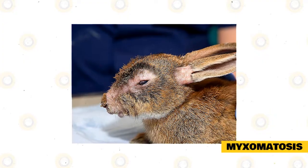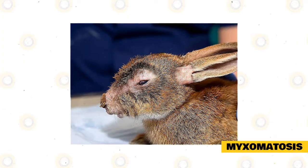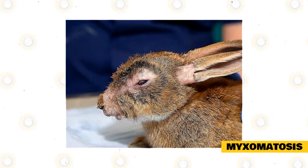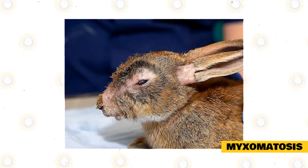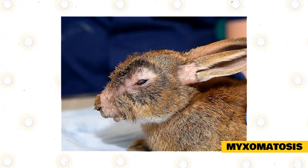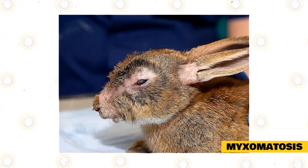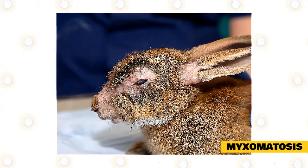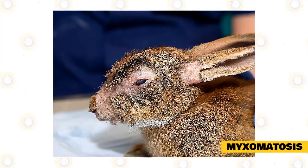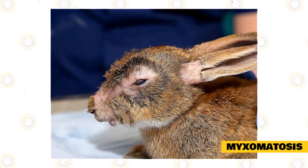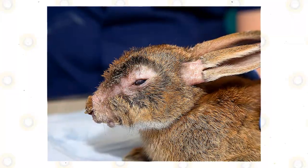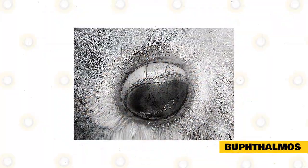Myxomatosis is a disease that rabbits experience due to the myxoma virus. An infected rabbit may instantly feel very ill, followed by conjunctivitis, loss of appetite, pyrexia, and lethargy. The mucus membranes of the eyes, mouth, nose, and genital areas become inflamed and swollen. A rabbit with this infection may die within 14 days if not treated.